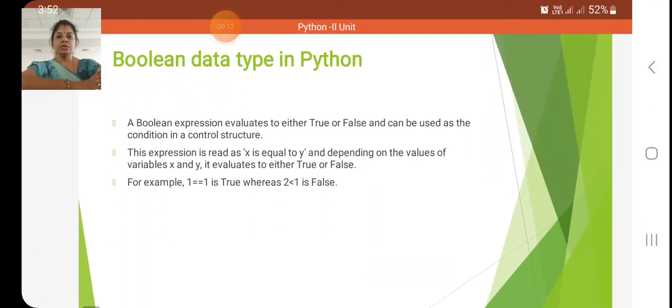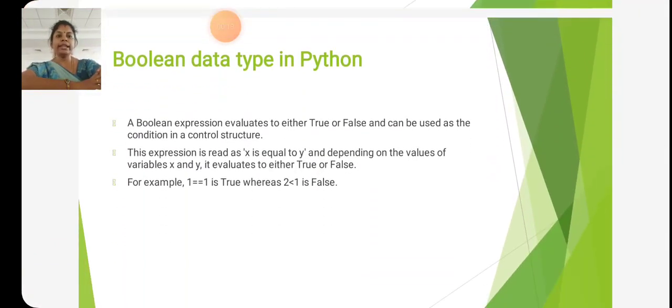In Unit 2, the first topic is Boolean data type in Python. A Boolean expression evaluates to either True or False and can be used as a condition in control structures. Boolean represents zeros and ones, which is True or False.